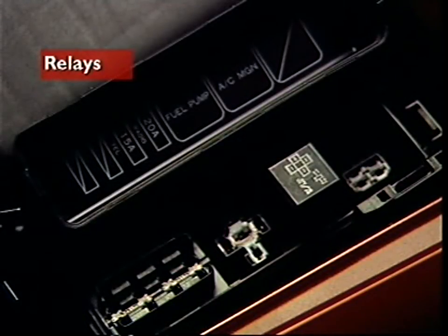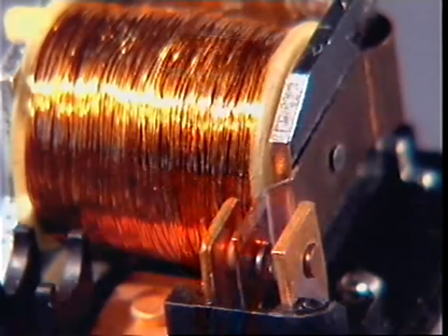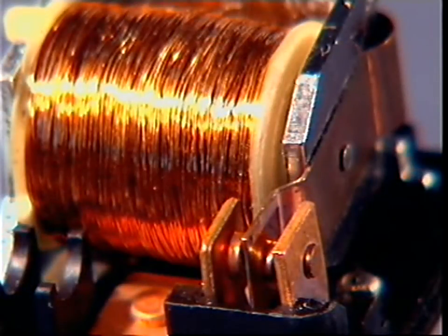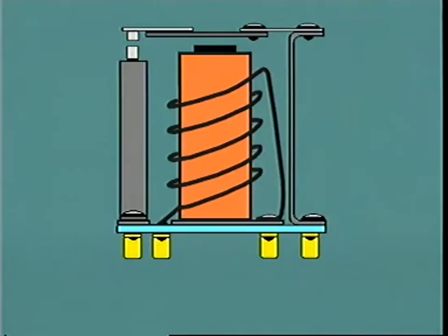This section examines relays. Relays are switches that are turned on and off by a small electrical current. Inside a relay is an electromagnet.